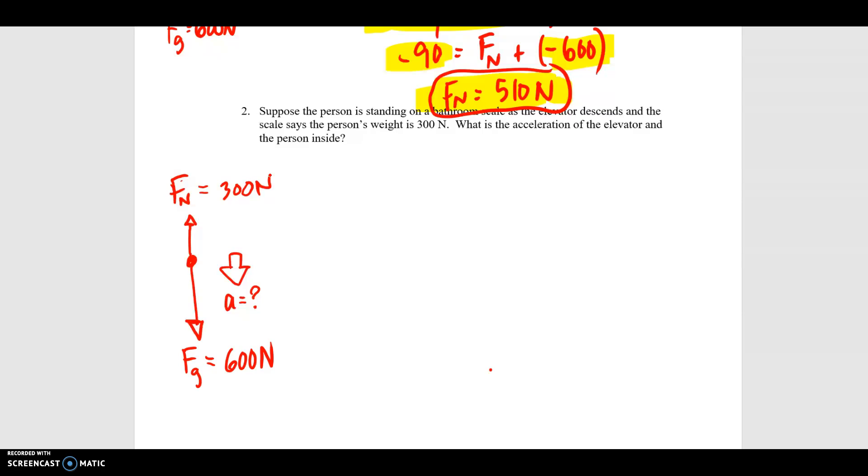So we want to know the acceleration. Well, Newton's second law allows us to calculate acceleration if we know the sum of the forces and the mass. We know both forces here, so we do know the sum of the forces. We have 300 newtons up combined with 600 newtons down, and all that divided by the mass of the person. It's the same person as above, so that's 60 kilograms.